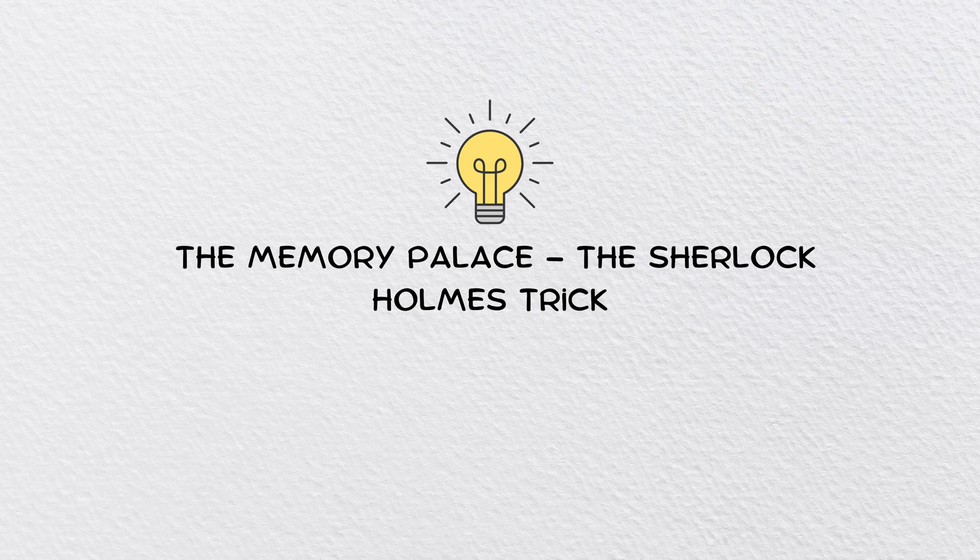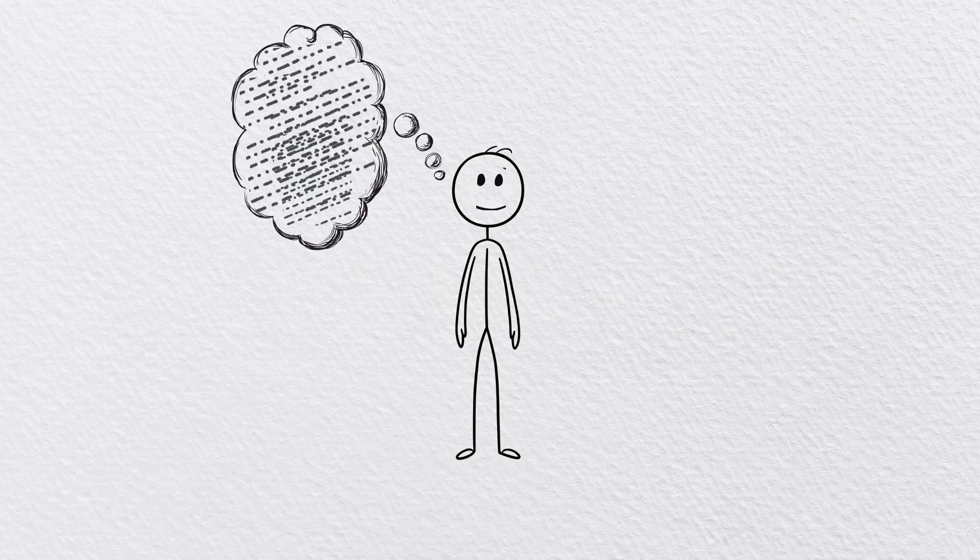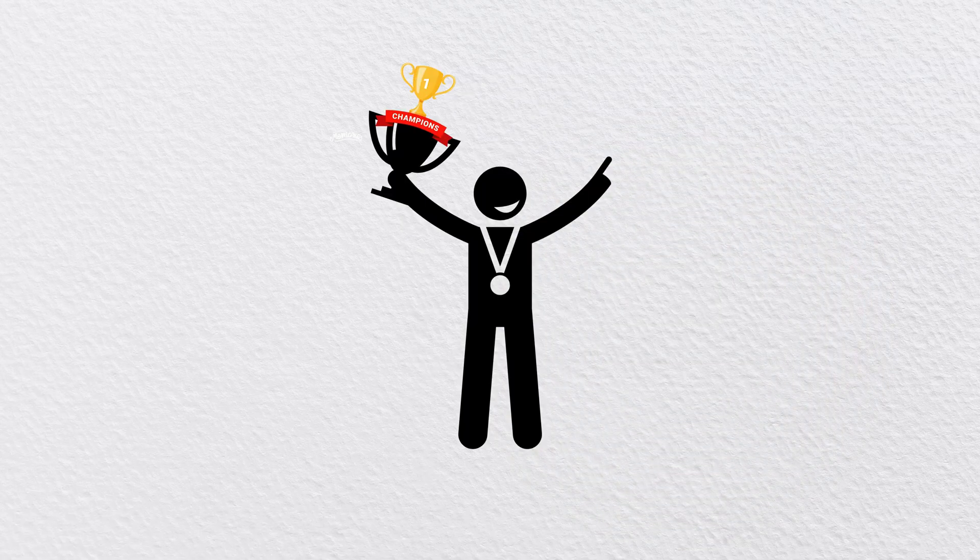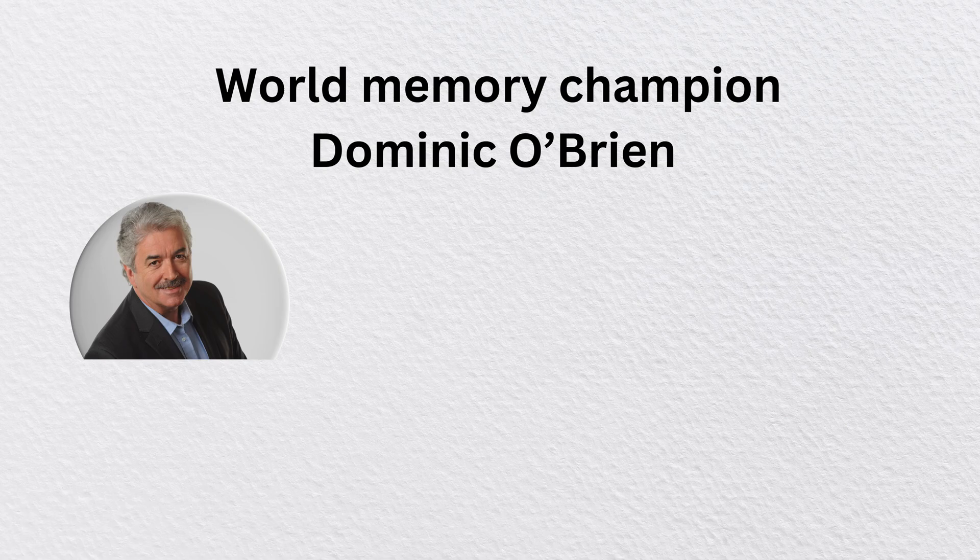The memory palace: the Sherlock Holmes trick. Ever wonder how some people remember hundreds of names, numbers, or facts effortlessly? The secret is the memory palace, a technique used by memory champions. World memory champion Dominic O'Brien used this trick to memorize over 50 decks of cards in order.